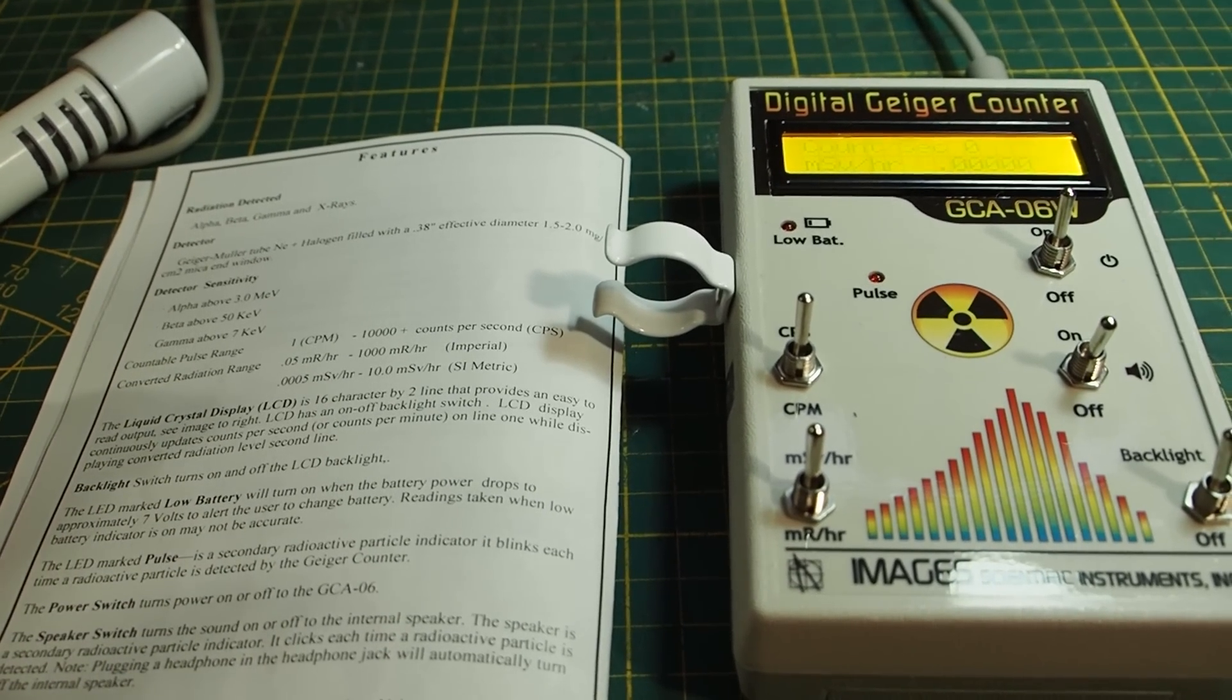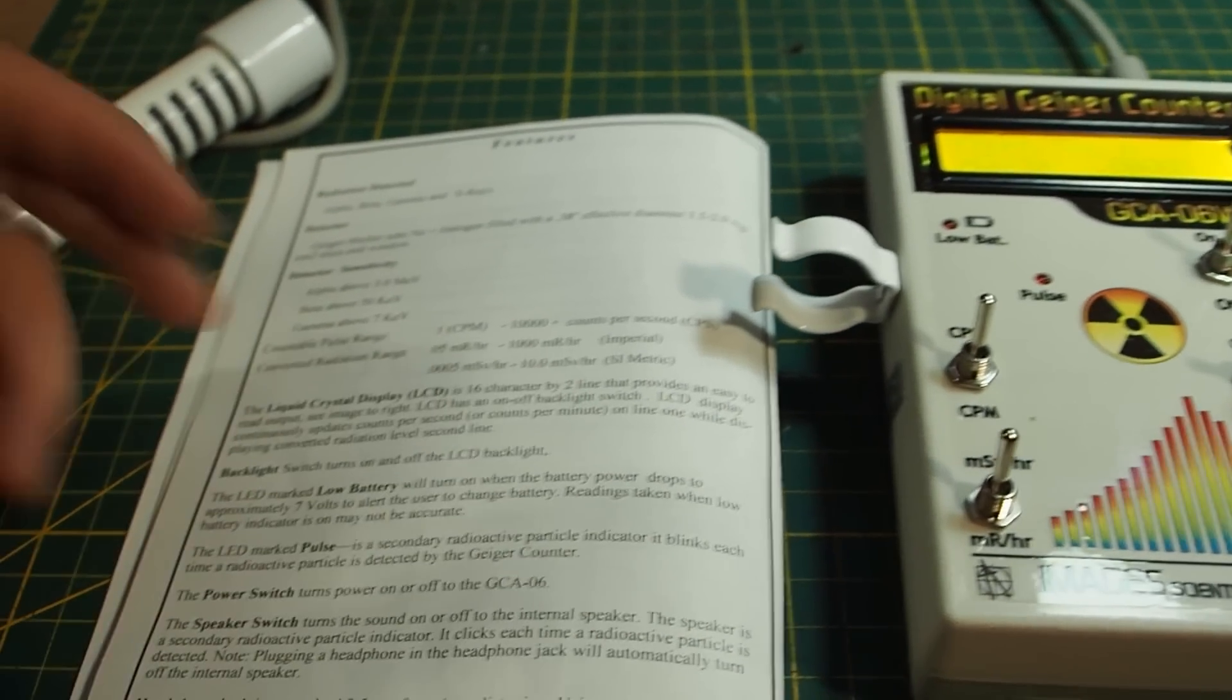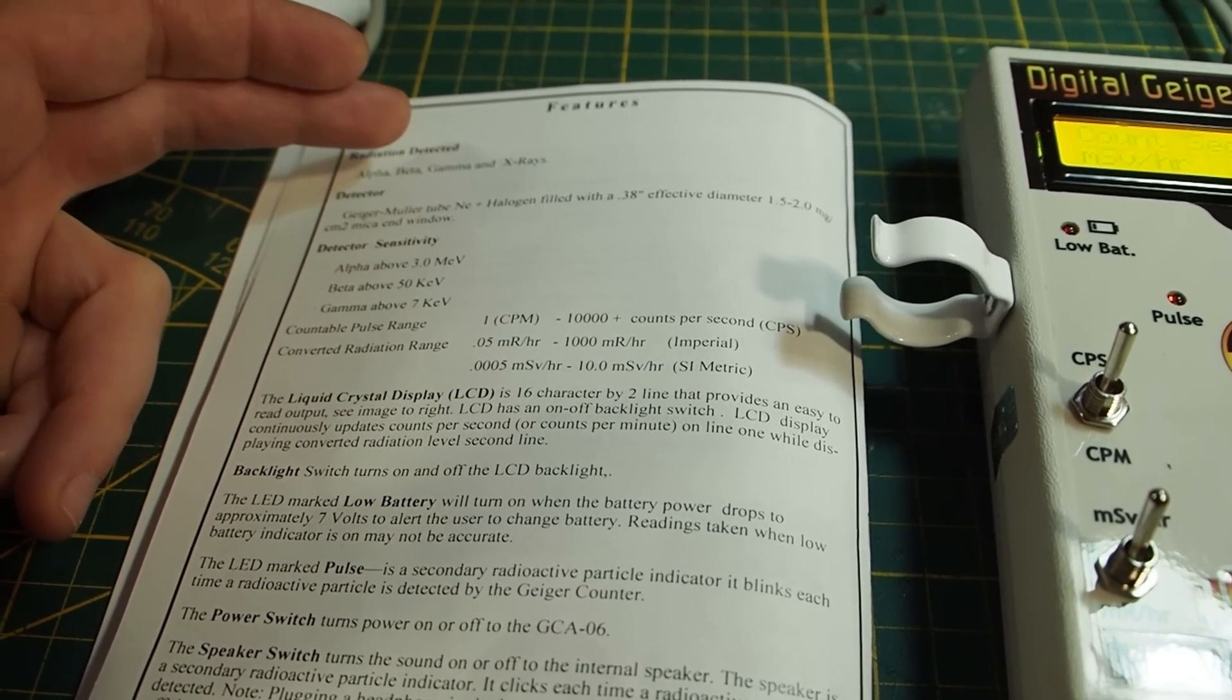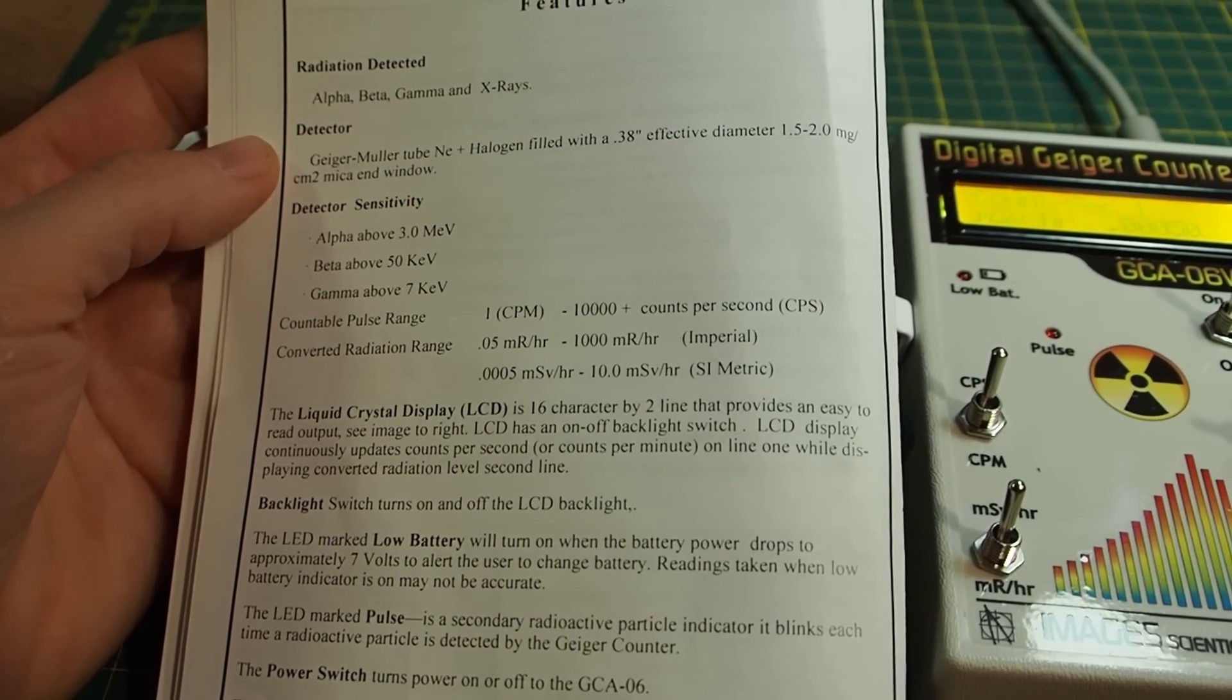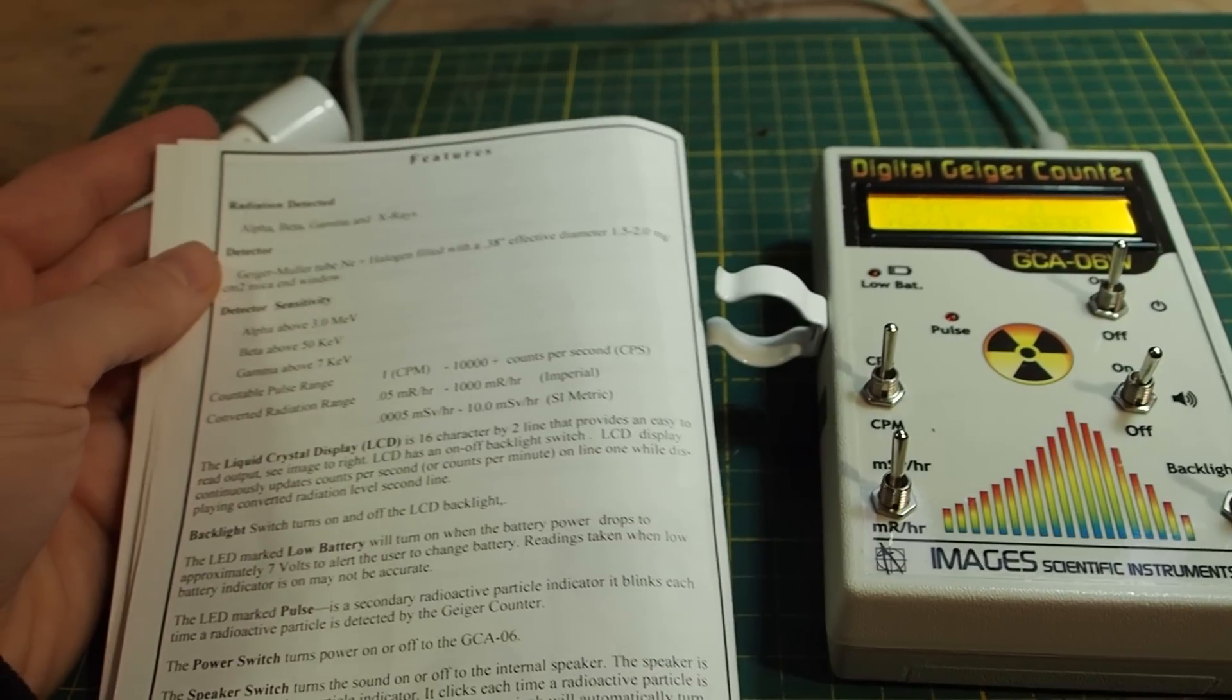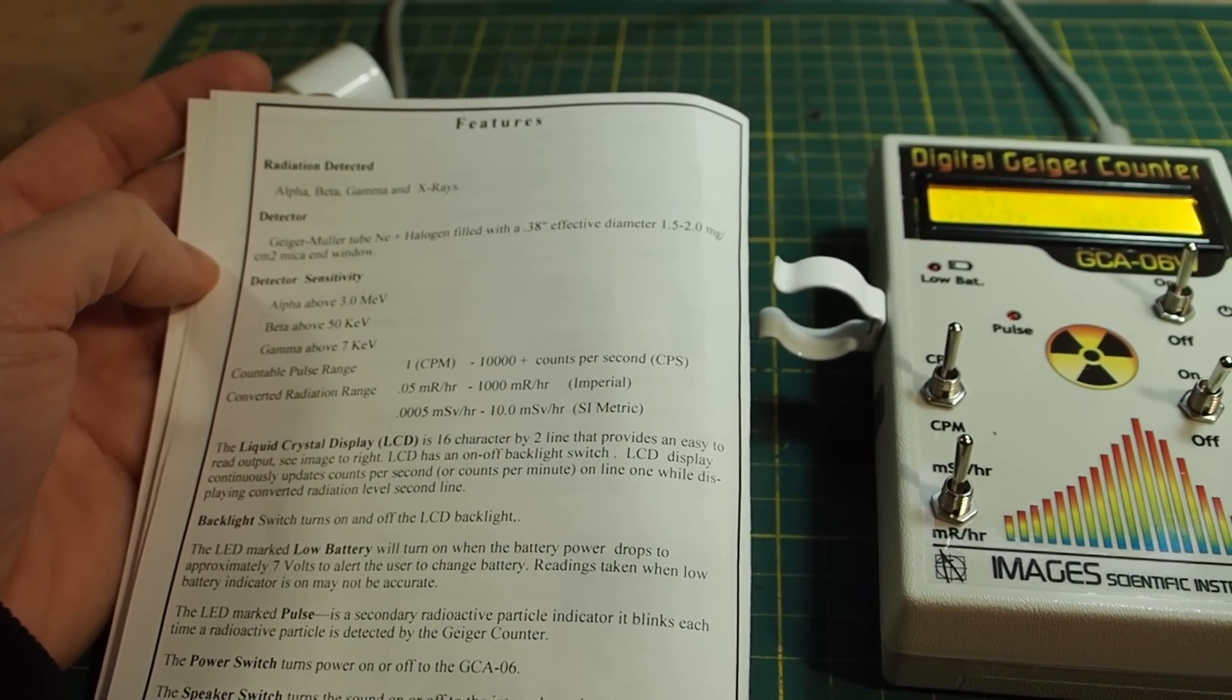Alright so now let's check out the features of this Geiger counter and why I'm so excited about it. This Geiger counter cannot only detect x-rays, gamma radiation and beta radiation but also alpha radiation. And alpha radiation is not for certain with every Geiger counter. So most Geiger counters only detect beta and gamma but very often not alpha radiation.